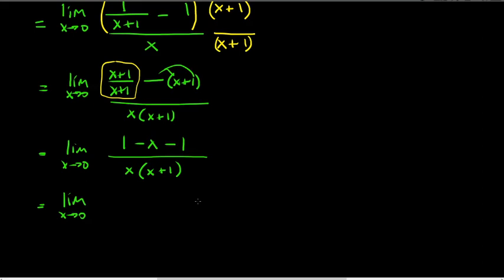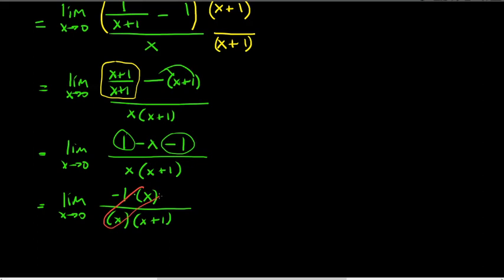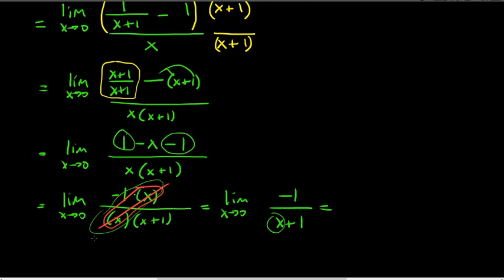Since 1 minus 1 is 0, the numerator is just negative x, which cancels with the x in the denominator. We end up with the limit as x approaches 0 of negative 1 over (x+1). Now there's no problem — you can replace x with 0, so it's continuous. Plugging in 0 gives negative 1. That's the answer: negative 1.